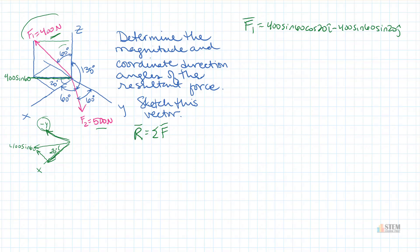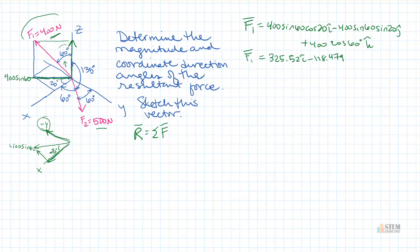Now that we're through with the 20-degree angle, we go back to our 60-degree angle, because that related our force to the z-axis. Our z component is adjacent to that 60-degree angle, and notice it's pointing up so it's positive: plus 400 cosine 60 k. That's how you break that down and get your three components. Simplifying, we get 325.52i minus 118.479j plus 200k newtons.